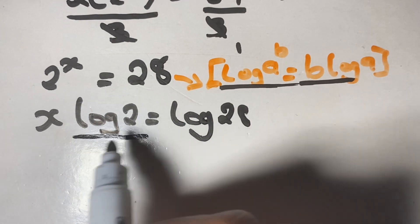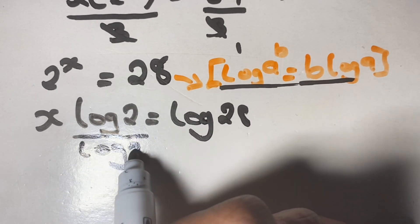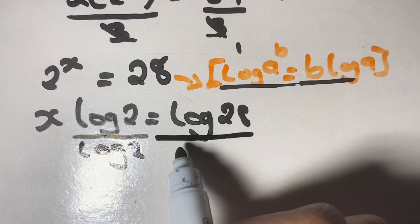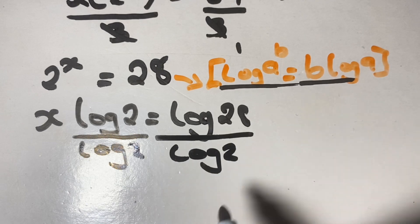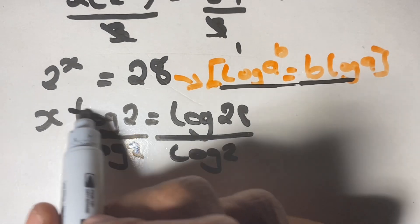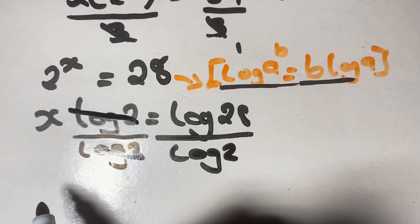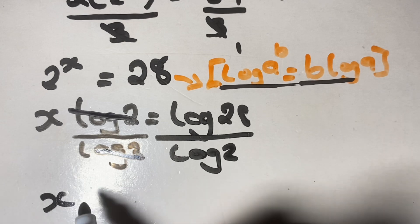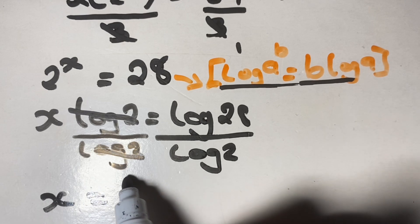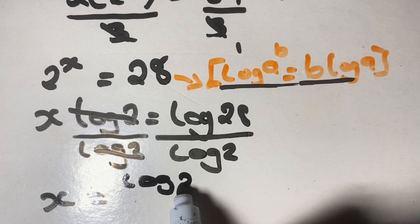To solve for x, we leave x on one side of the equation by dividing both sides by log 2. So log 2 will be cancelled out on the left, and now we have x is equal to log 28 over log 2.